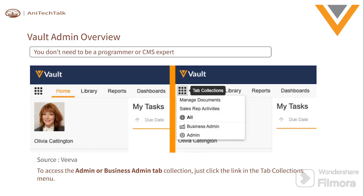This slide shows the difference between what a Business Admin user and an Admin user can perform in the Veeva platform. A person with Business Admin access can manage objects, manage pick lists, and manage templates. When talking about objects, a Business Admin can manage object records - for example, creating a product record. The creation of the object itself is handled by the System Admin team, but the Business Admin can create the actual records within that object.